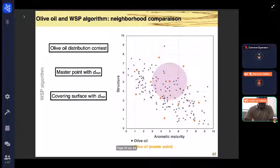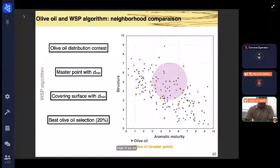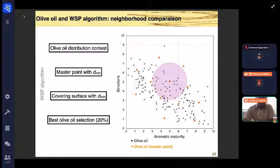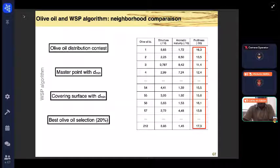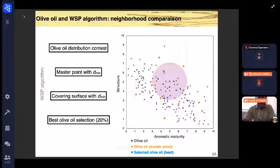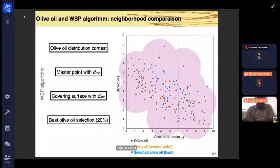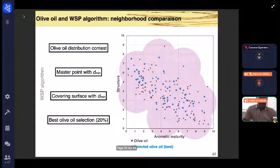For each covering surface, it's now necessary to determine the best oils in this area. To determine the best oil for each defined surface, we base on the third score, the fruitiness score, and we select the oil with the best fruitiness harmony score. We do this for all over the space. And by this method, we select the best oil for each area with similar structure and maturity.